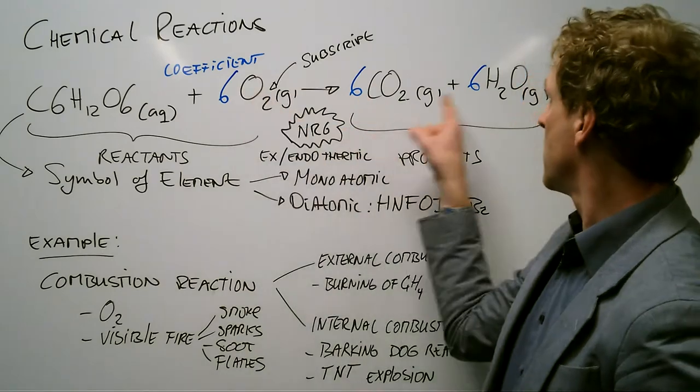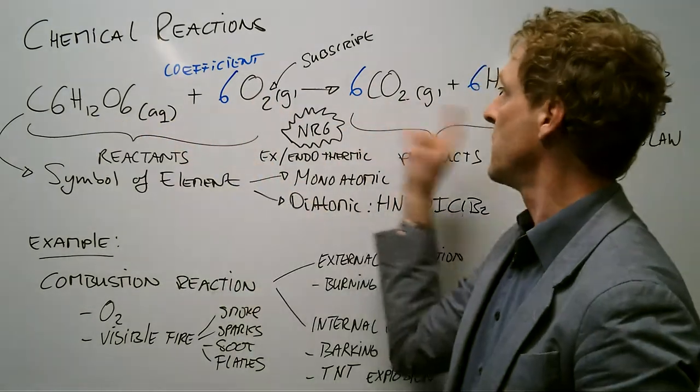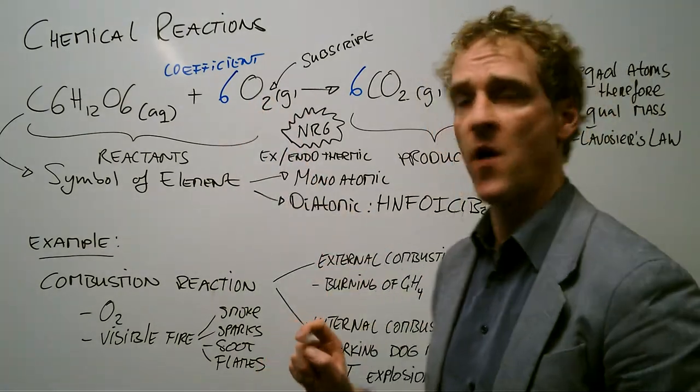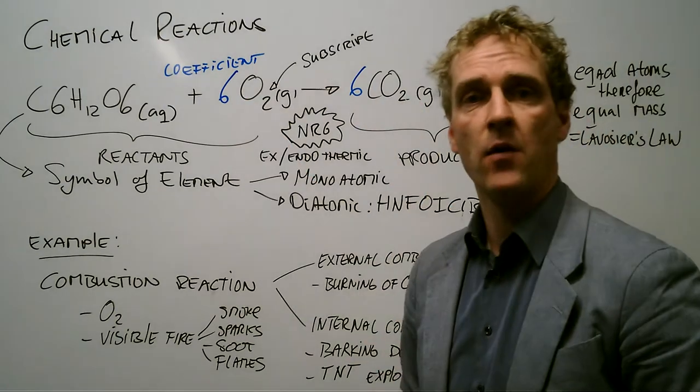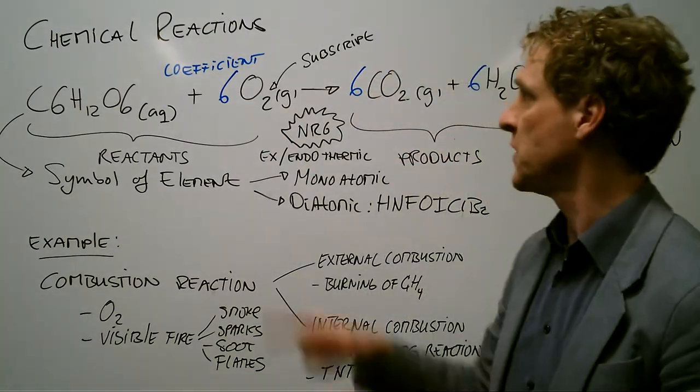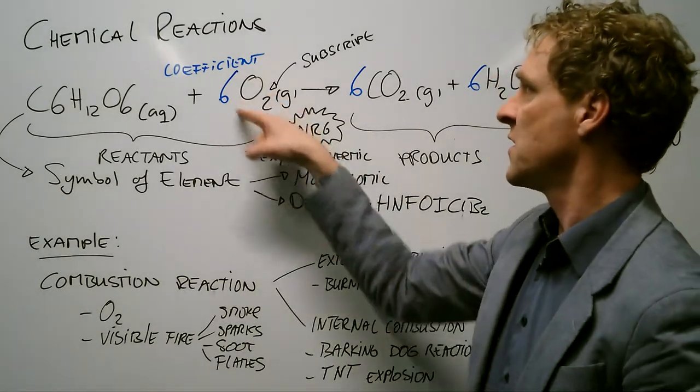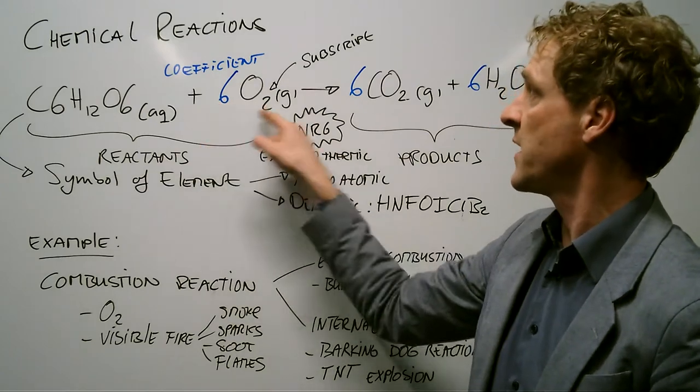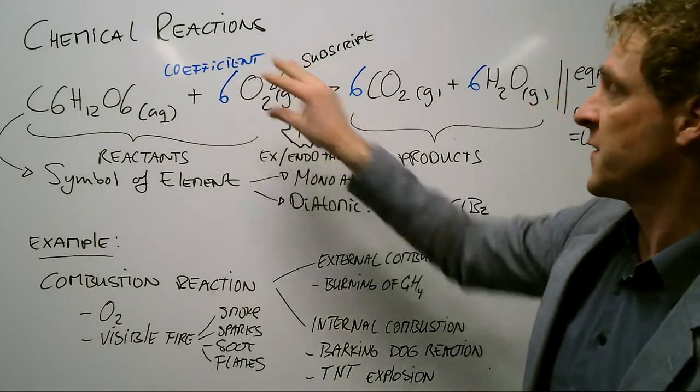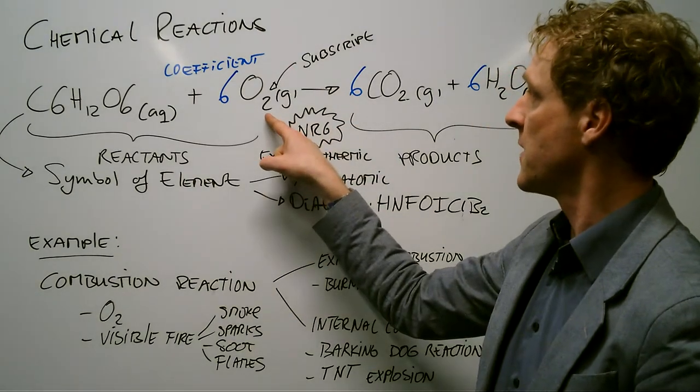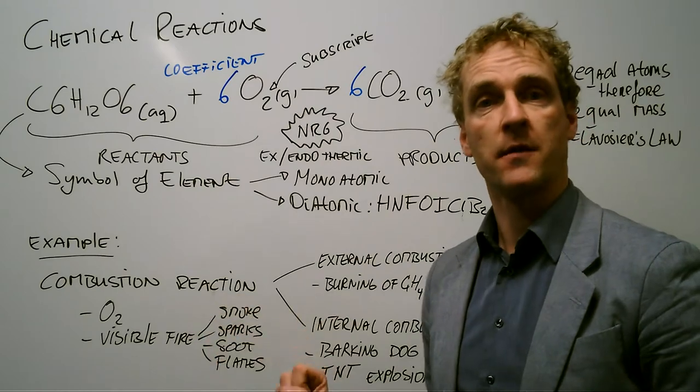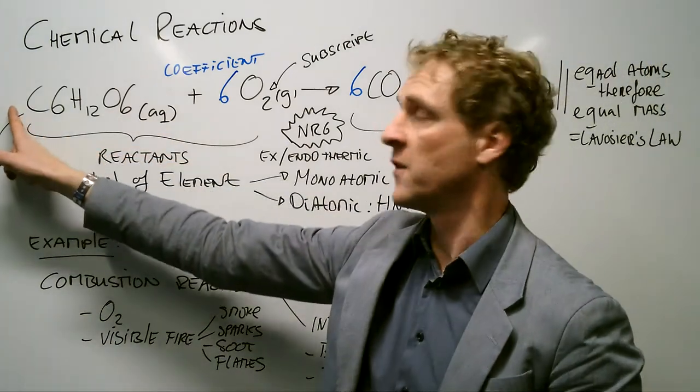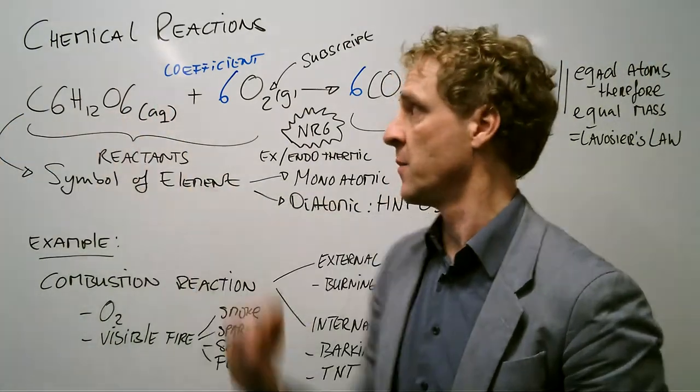When you write down the four components of this reaction, you find out that there are different amounts of oxygen on either side of the arrow and we need to balance it. Balancing you can only do by adding coefficients, and the coefficient is meant for the entire molecule. The subscripts are only for the atom they're behind. This six is only meant for the oxygen, and the one in front that I didn't write down is meant for the entire molecule.